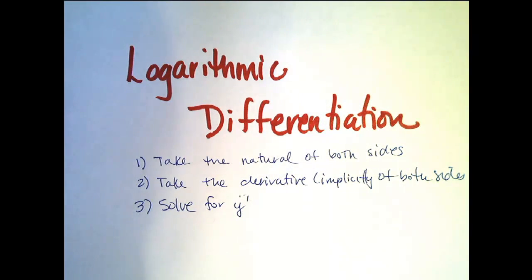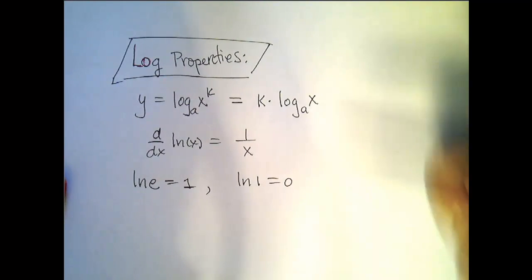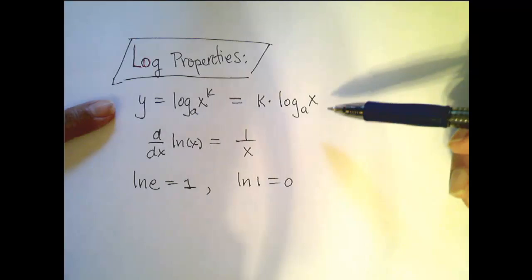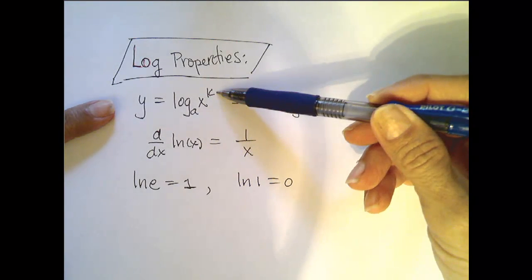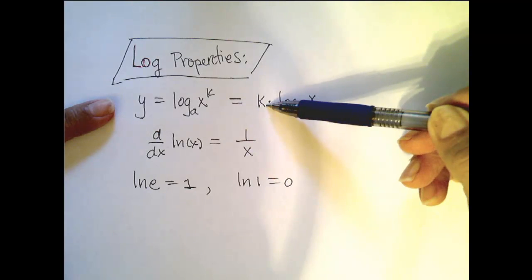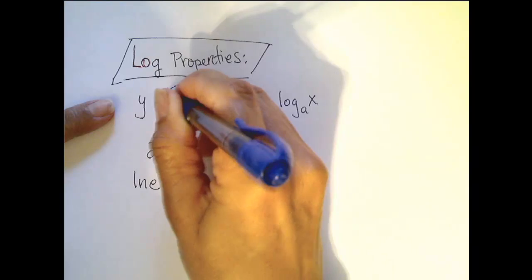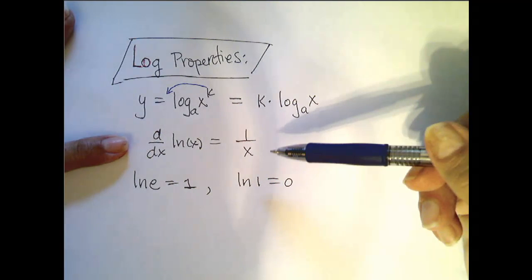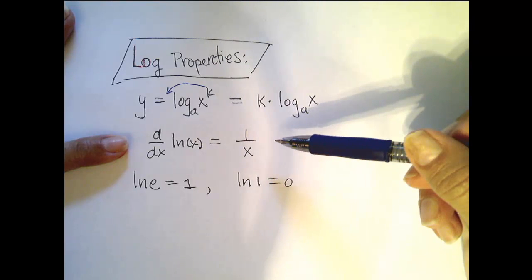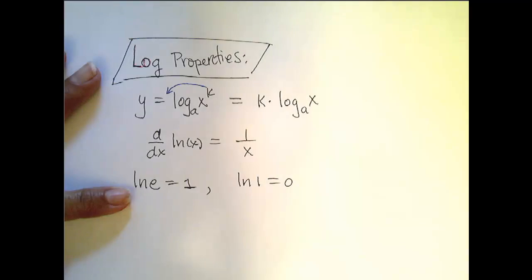In order to do that, we're going to make sure we remember a few of our log properties. This is the power property that comes in when doing logarithmic differentiation. The log base a of x raised to a power is equal to that power times the log base a of x — so you can bring that power down in front. Also remember the derivative of the natural log of x is 1 over x, and ln of e is 1, ln of 1 is 0.